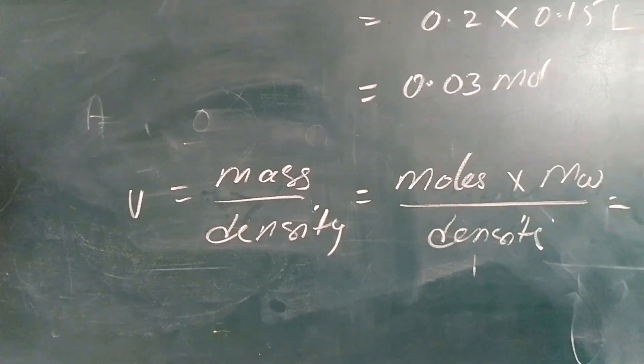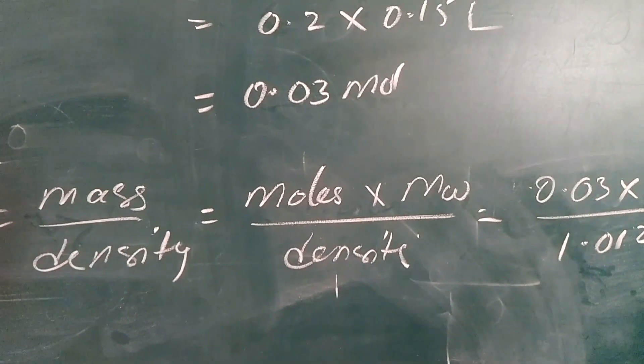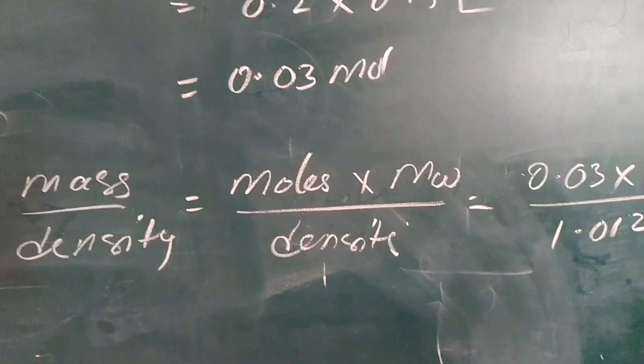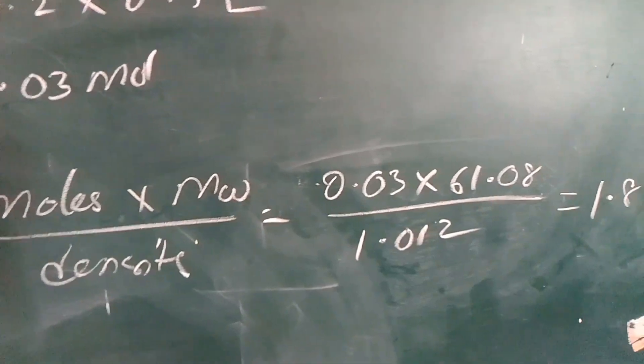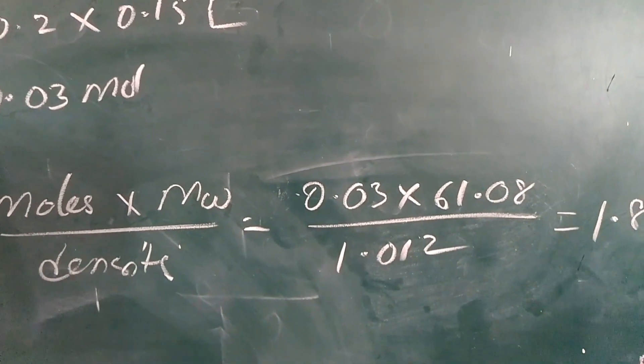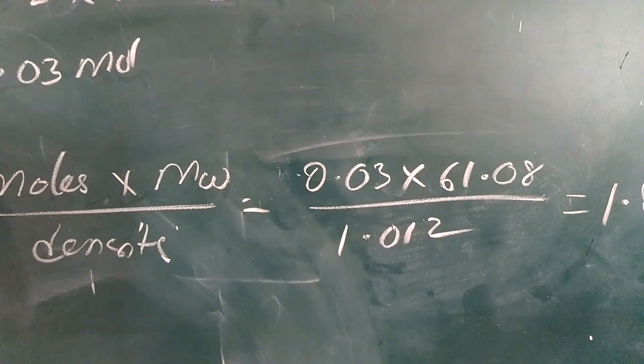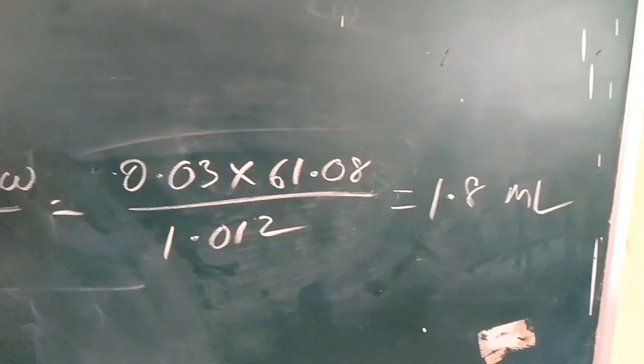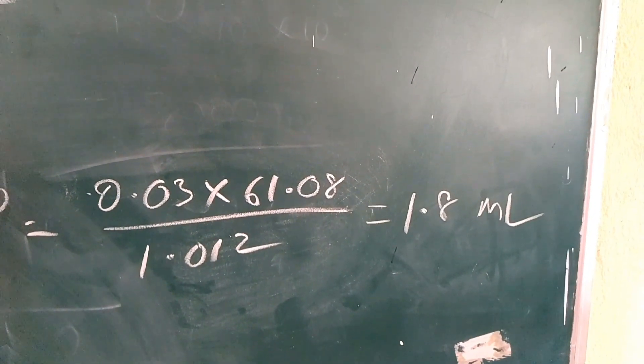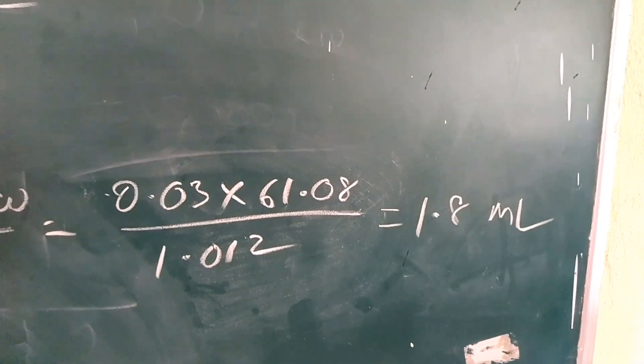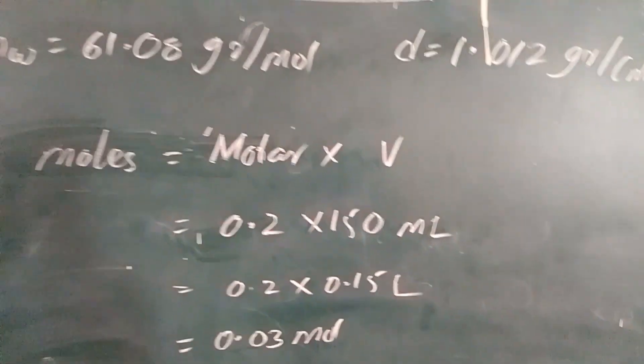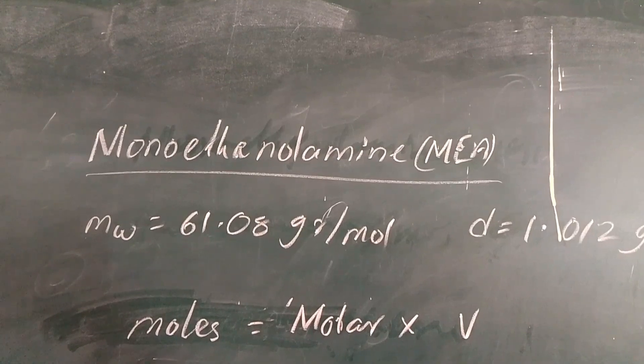Volume equals mass divided by density, which is moles into molecular weight divided by density. So moles is 0.03, molecular weight of MEA 61.08 divided by the density 1.012, that will give you around 1.8 ml.